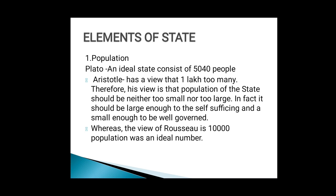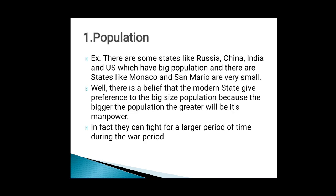In fact, it should be large enough to be self-sufficing and small enough to be well governed. The third philosopher, Rousseau, according to his view, said 10,000 was an ideal number. For example, there are states like Russia, China, India, and the US which have big populations.